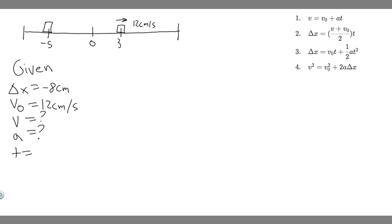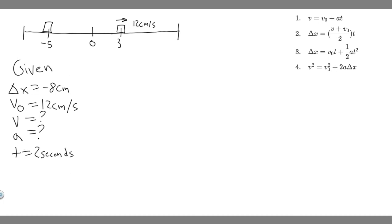t is just time — how much time passes during this interval. We're told it starts here, and then 2 seconds pass, and now it's at the new position. So the time that passes is 2 seconds. So now we have written out every single variable: we have delta x, we have v sub 0, and we have t. What we're trying to solve for is a.